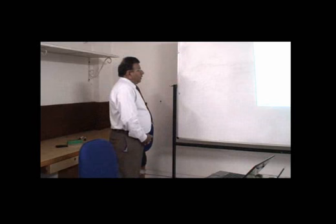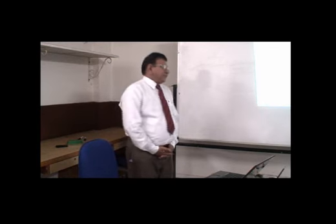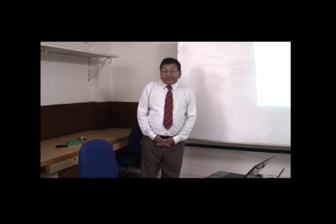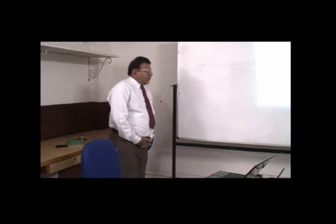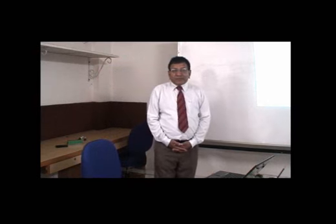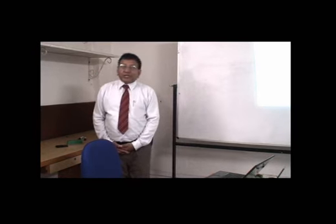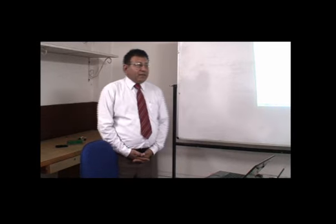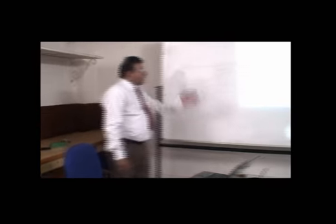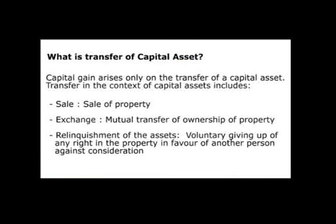Capital gain arises only when there is a transfer of capital asset. If there is no transfer of capital asset then there shall not arise any capital gain. First there should be a transfer, then there should be a capital asset, and such transfer of the capital asset should have resulted in a capital gain — only then shall the gain or profit be subject to tax under this head. The question arises: what exactly is the transfer?